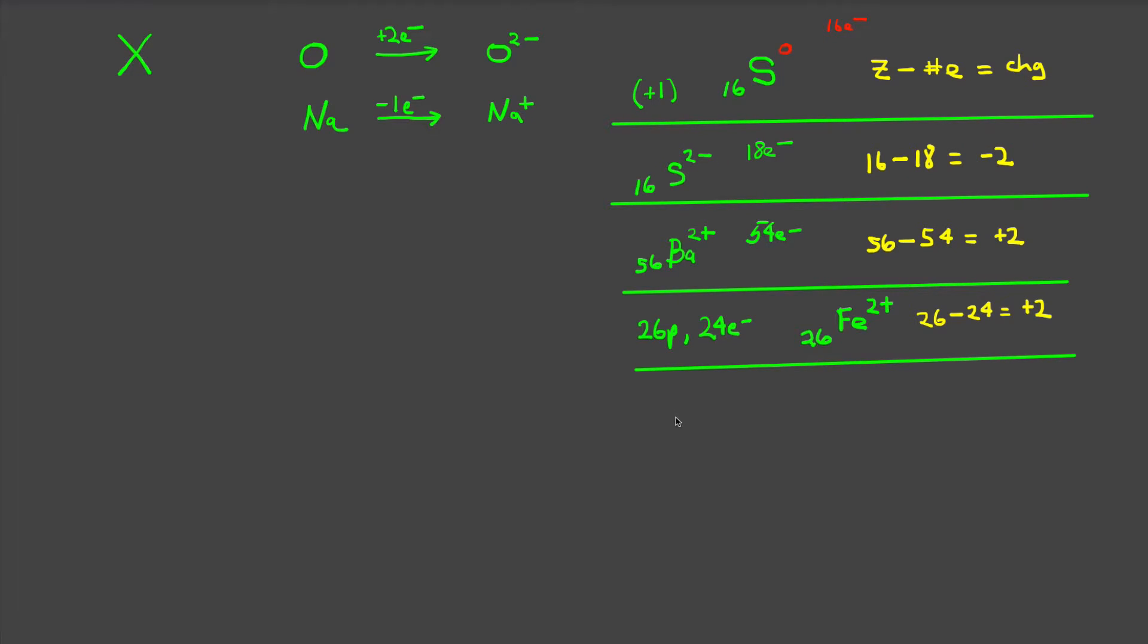Finally, let's work one more. Let's assume we have a chemical species. We don't know what it is, but we do know that it has a negative 3 charge, and we also know that it has 18 electrons. What is that chemical species? If we have 18 electrons, we know because there is a negative 3 charge, we must have 3 more electrons than protons,